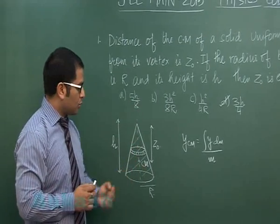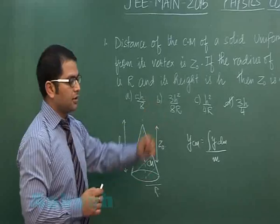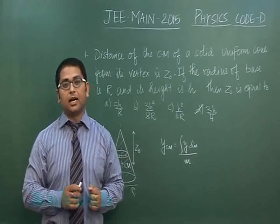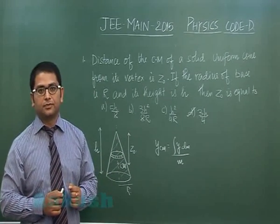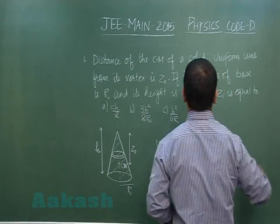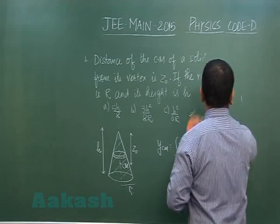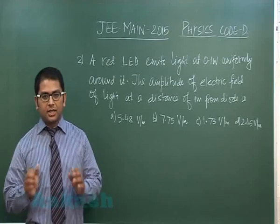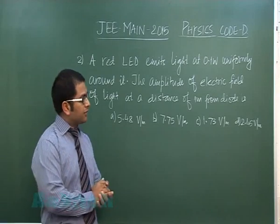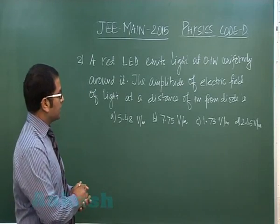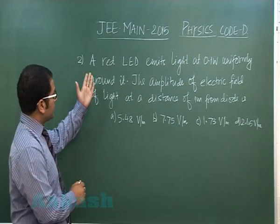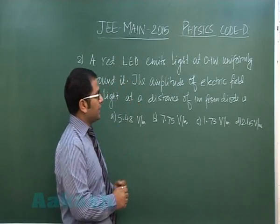Now let's go to question number two. Question number two is from the topic electromagnetic wave. It says a red light emitting diode emits light at 0.1 watt.